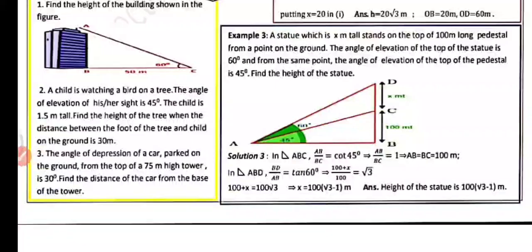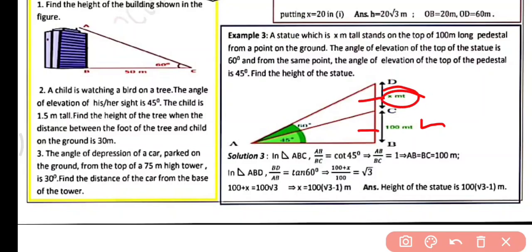Example 3: A statue x meters tall stands on top of a 100-meter pedestal. From a point on the ground, the angle of elevation of the top of the statue is 60° and the angle of elevation of the top of the pedestal is 45°. Find the height of the statue. In triangle ABC, AB/BC = cot 45° = 1, so AB = BC = 100 meters.